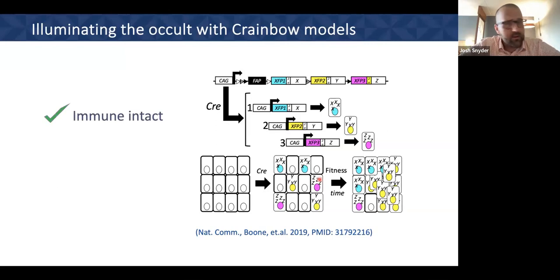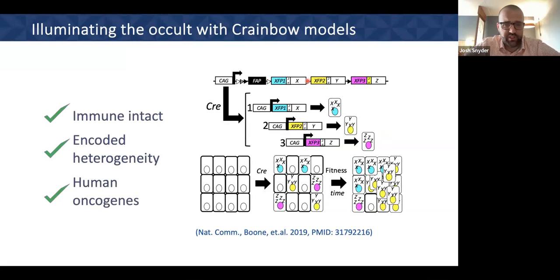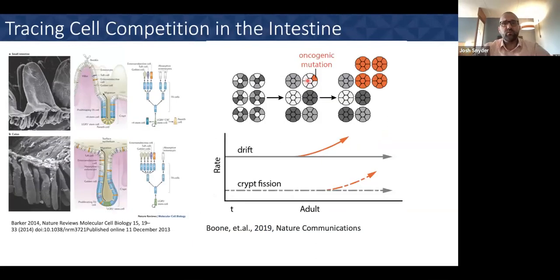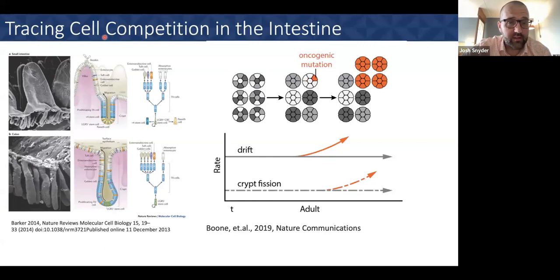Some great benefits to our model: it is immune intact, it enables us to encode in a reliable and reductionist strategy a view of genetic heterogeneity, and many of our models encode human oncogenes — making it really nice for testing therapies that might be used in the clinic. We first went to the intestine to establish this model rigorously, because the intestine has such a well-described stem cell hierarchy. The small intestine and colon both have stem cells residing at the very base of their crypts.